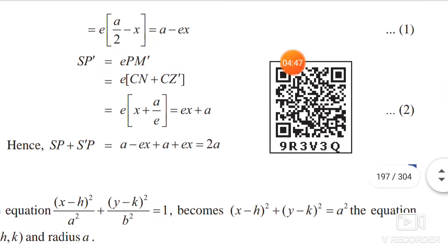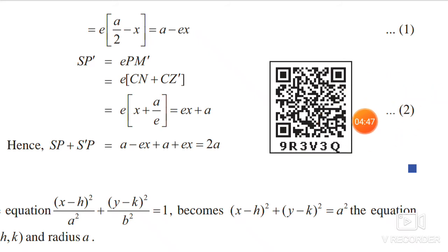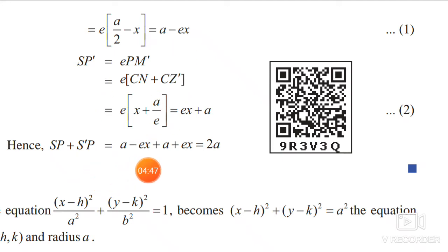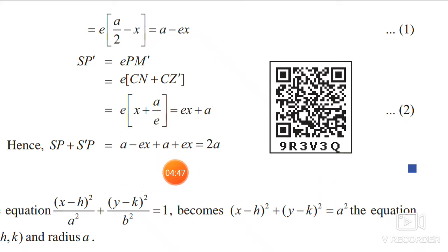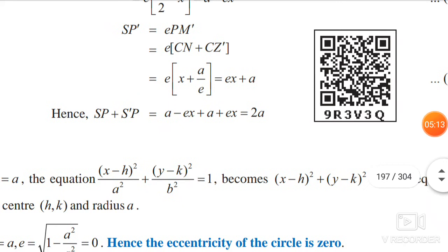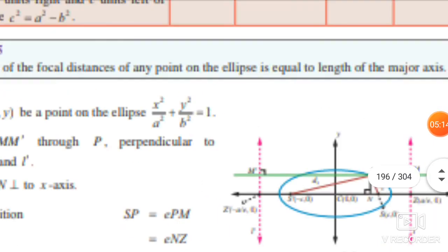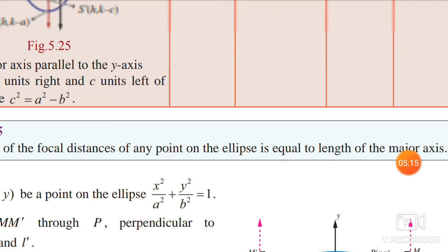Adding Equation 1 and Equation 2: SP plus S'P equals (a minus ex) plus (a plus ex). The terms minus ex and plus ex cancel each other, so we obtain SP plus S'P equals 2a. Since 2a is the length of the major axis, the sum of the focal distances of any point on the ellipse equals the length of the major axis. Proved.